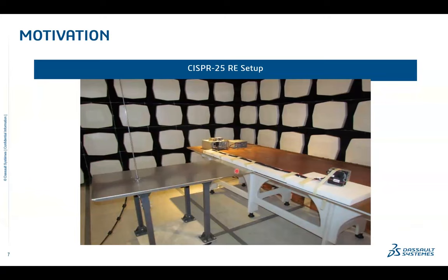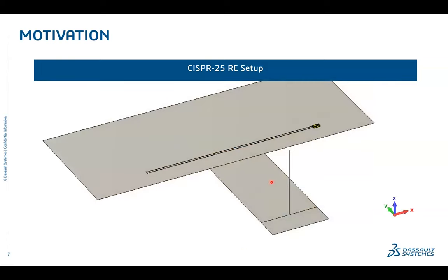CST Studio Suite has reached a mature level where you can set up a 3D model that mimics a specific test setup. For example, this is a typical RE setup per CISPR 25 — you basically have a monopole antenna placed about one meter away, with specific lengths of wires connected to your structures. You can then see whether this antenna picks up any signals when the PCB is operating. This entire chamber setup can be created in CST itself in just a few clicks.